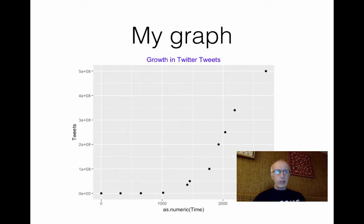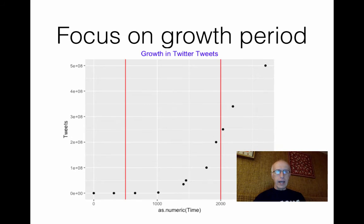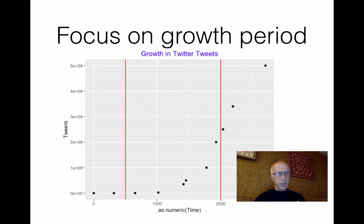I'm going to try to explain that by straightening. I'll focus on the middle range where there was explosive growth in Twitter tweets — the region between the red lines — and try to straighten that part of the graph by means of an appropriate re-expression.